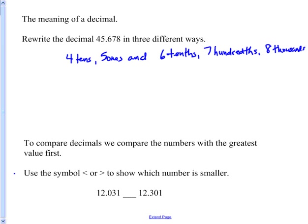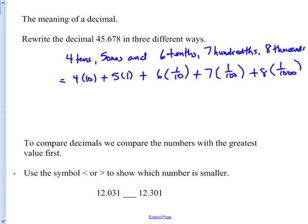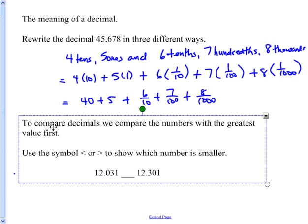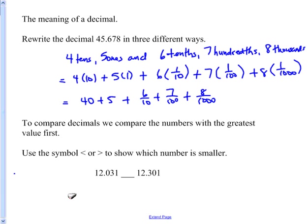Often we can write it in a bunch of different ways. Another way is to use what we call an expanded notation: four times ten, plus five times one, plus six times one-tenth, plus seven times one-hundredth, plus eight times one-thousandth. Or, we can write it a little different way: forty plus five plus six-tenths, plus seven one-hundredths, plus eight-thousandths. So there's a couple different ways of rewriting that. Basically what we're doing is we're taking apart that number and looking at what each digit represents.